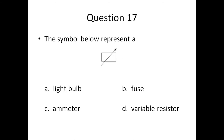Question seventeen: the symbol below represents — A) a light bulb, B) a fuse, C) an ammeter, or D) a variable resistor.